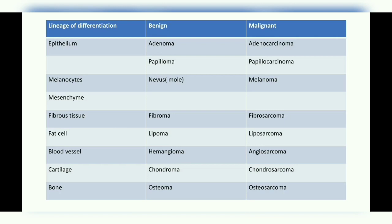A benign tumor of fat cells is a lipoma and the malignant tumor of fat cells is a liposarcoma. A benign tumor of blood vessels is a hemangioma and the malignant tumor of blood vessels is an angiosarcoma. A benign tumor of cartilage is a chondroma and the malignant tumor of cartilage is a chondrosarcoma.